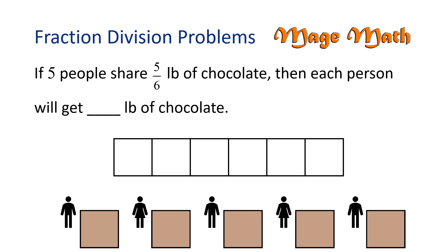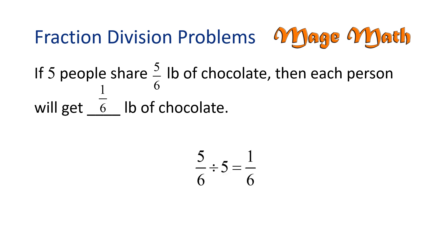That's right! It was 1 sixth. So, 5 sixths pounds of chocolate divided among 5 people is 1 sixth pounds of chocolate. Nice job!